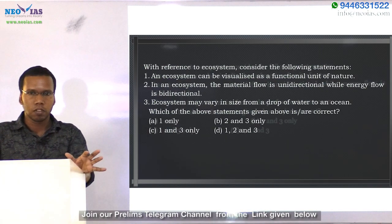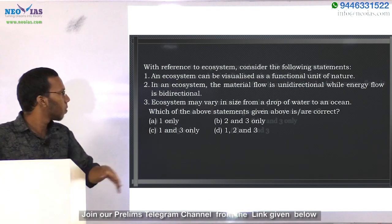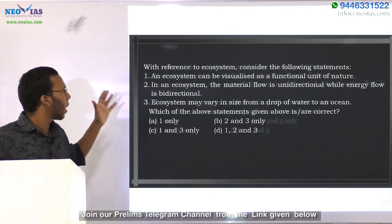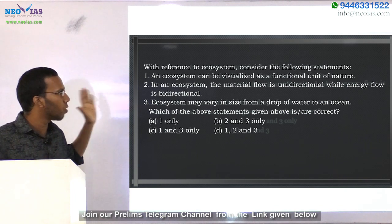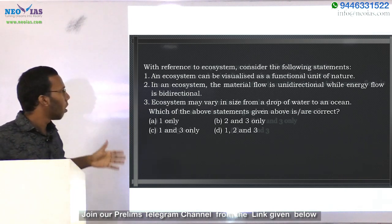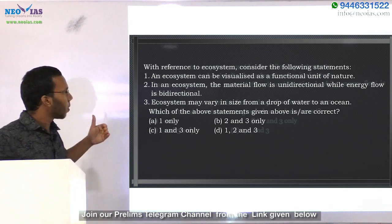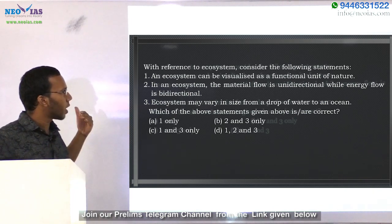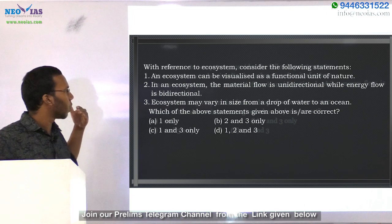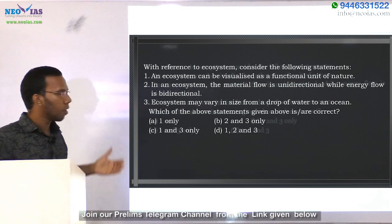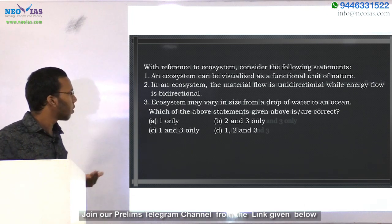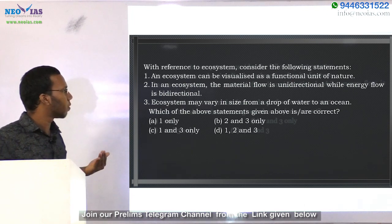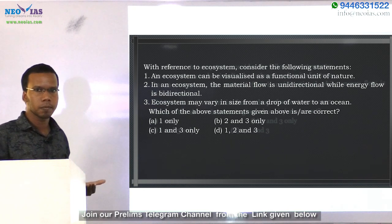This is the question regarding ecosystem. First statement: an ecosystem can be visualized as a functional unit of nature. In an ecosystem, the material flow is unidirectional while the energy flow is bidirectional. Third statement: ecosystem may vary in size from a droplet of water to an ocean.